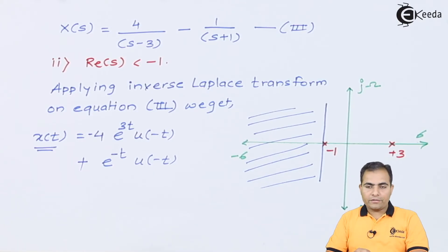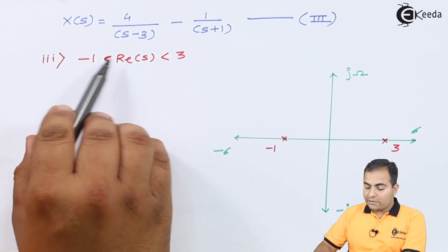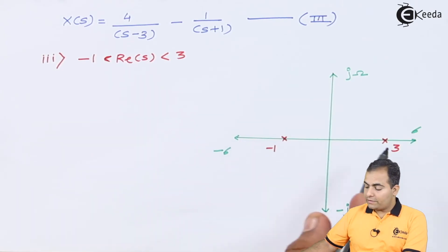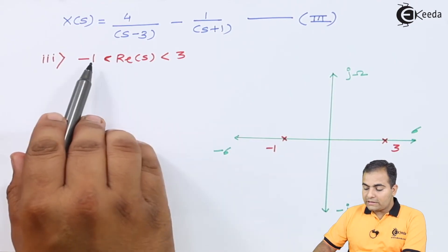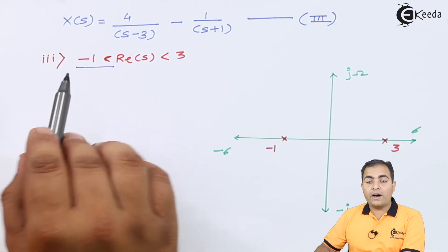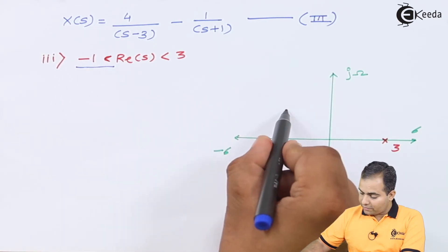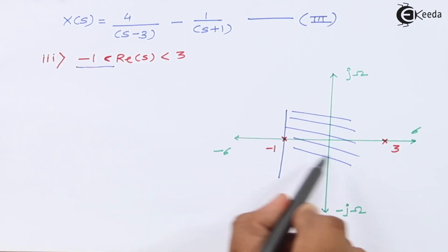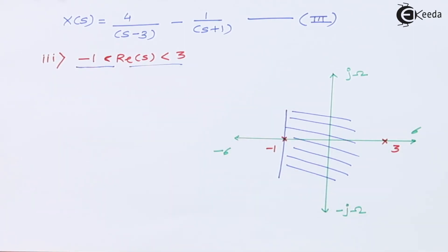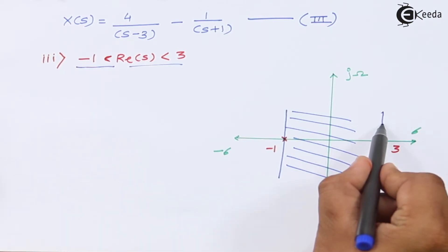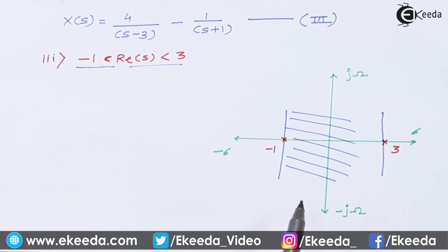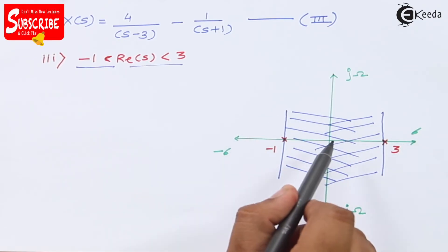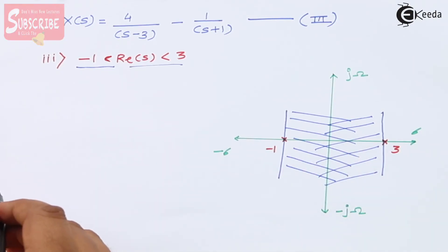For ROC 3: the two-sided ROC existing between -1 and 3. The poles are at s = -1 and s = 3. For the pole at s = -1, the ROC is to the right (Re(s) > -1), so it is right-handed sided. For the pole at s = 3, the ROC is to the left (Re(s) < 3), so it is left-handed sided.